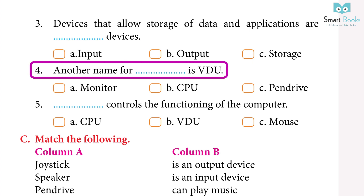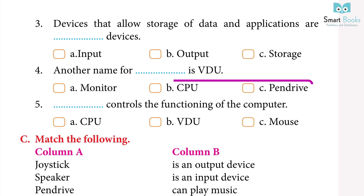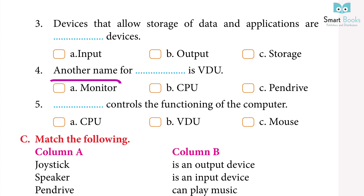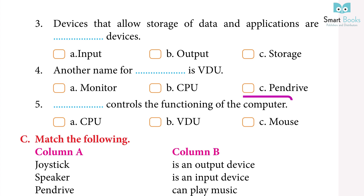Question 4: another name for dash is VDU. A. Monitor, B. CPU, C. Pen drive. Answer: A. Monitor.